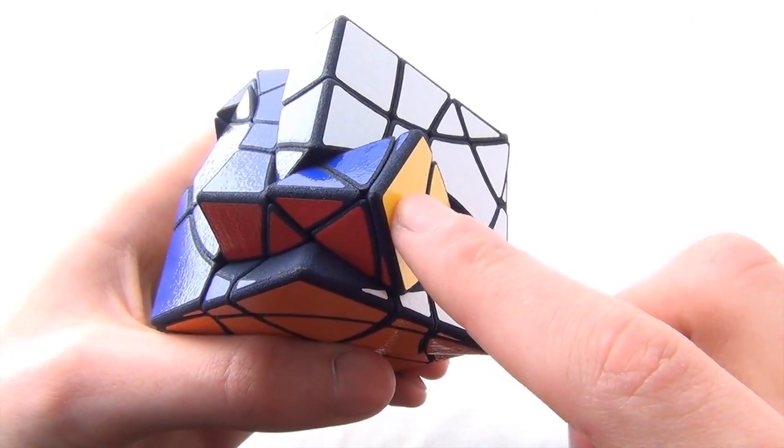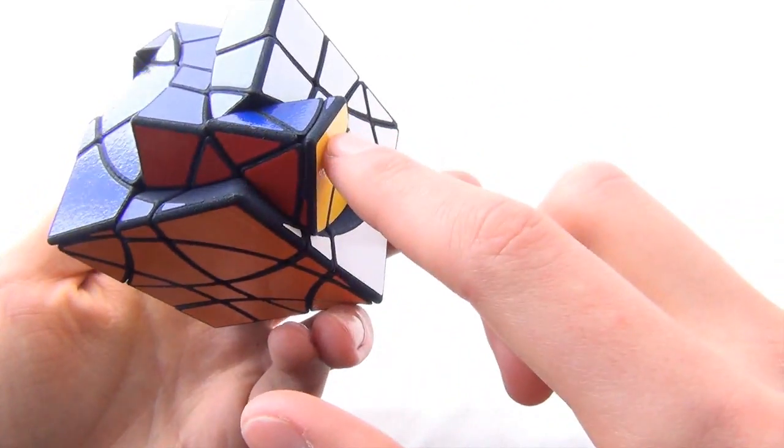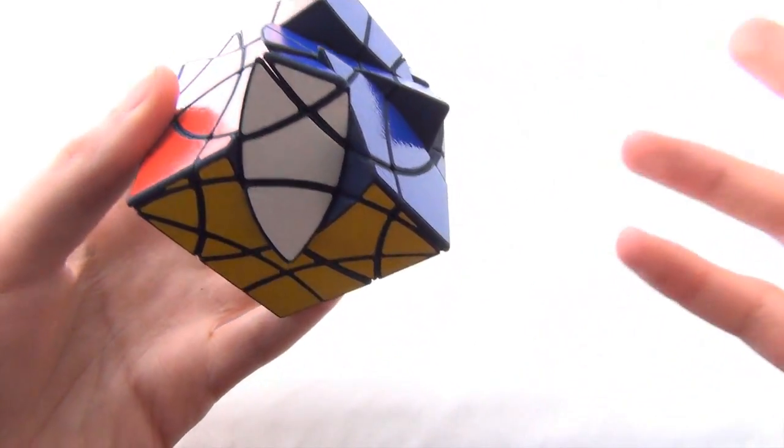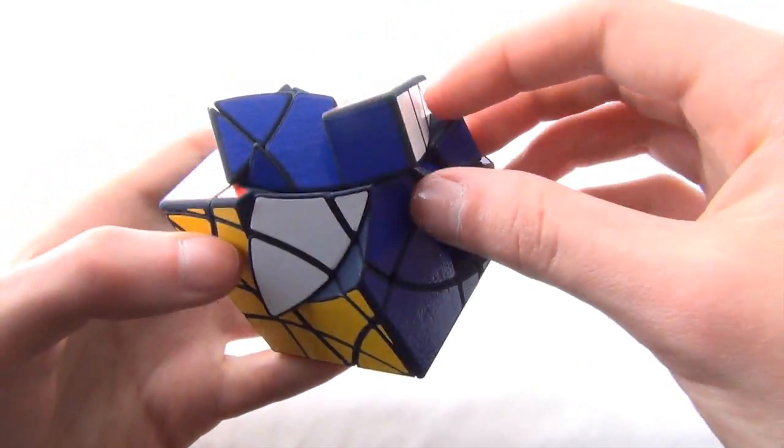But by doing jumbling moves, it allows these pieces to leave their orbits. And this results in, of course, more shape-shifting than would be possible with just 180-degree turns. So, that makes this puzzle very interesting.